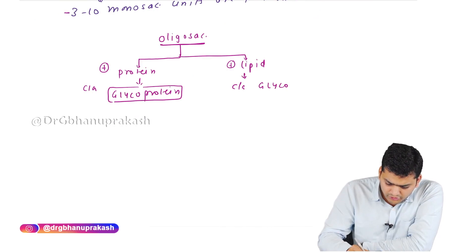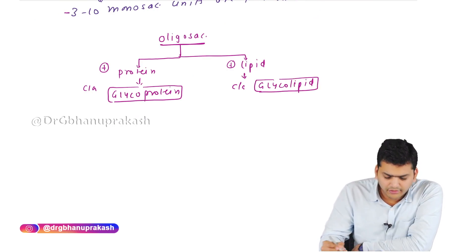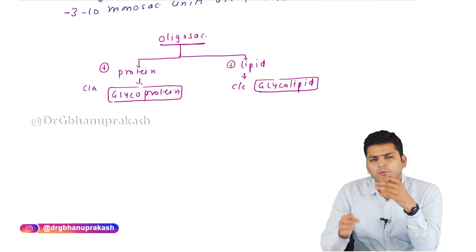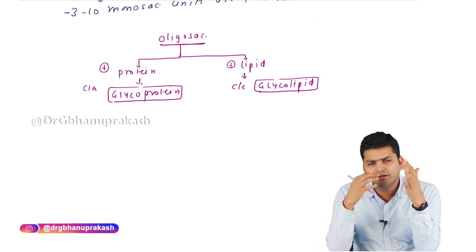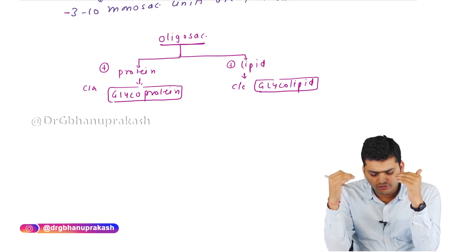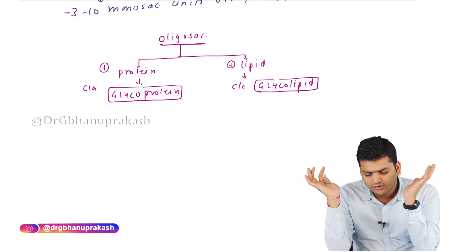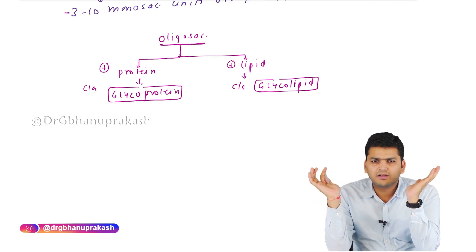Oligosaccharides are not usually found free in the body. They either link with a protein — forming a glycoprotein — or link with a lipid — forming a glycolipid.